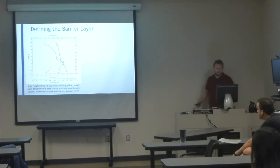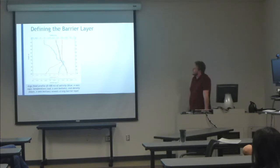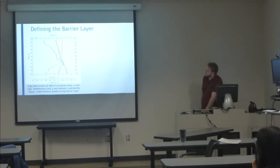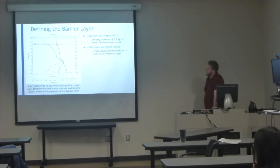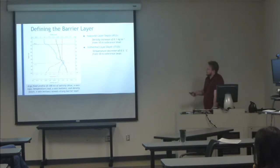Quickly I'll go over defining what the barrier layer is. This is a profile from the surface to 100-meter depth on the y-axis. The upper x-axis is salinity in blue, and the lower x-axes show red for temperature and black for density. The isopycnal layer depth of the mixed layer is defined as a density increase of 0.1 kg per meter cubed from the 10-meter reference level, which puts the isopycnal layer at about 18 meters. The isothermal layer depth is defined as a temperature decrease of a half degree Celsius from the 10-meter reference level, putting the isothermal layer at about 72 meters — a very large barrier layer extent of about 50 meters.